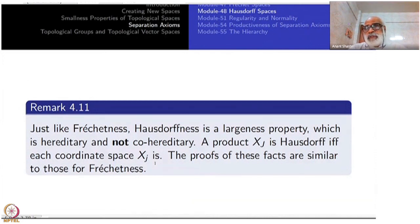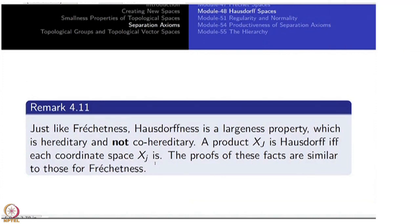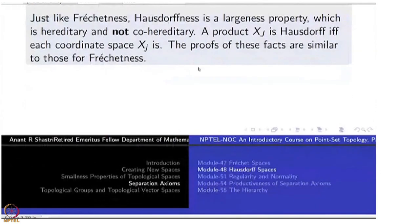All these proofs are exactly similar to what we have done for Fréchet spaces and are straightforward. The only subtlety is why Hausdorffness is not co-hereditary. The same example works: collapsing an open interval, say (0,1), inside R. The real line is Hausdorff, but the resulting quotient space will not be Hausdorff. So do not make the mistake of assuming quotient spaces are Hausdorff — quotients are very delicate.